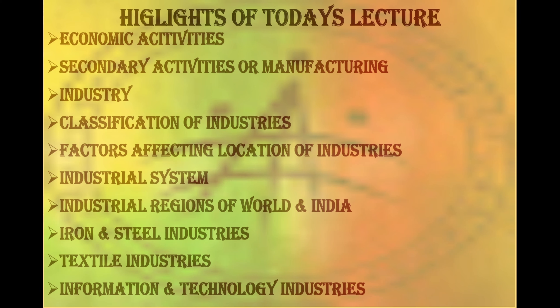In this chapter we will be discussing about economic activities and its types, then focusing on secondary activities. We will be discussing what is industry, classification of industries in detail, factors affecting location of industries, industrial system, then industrial regions of world and India, major industries that is iron and steel industry, textile industries and information technology industry.